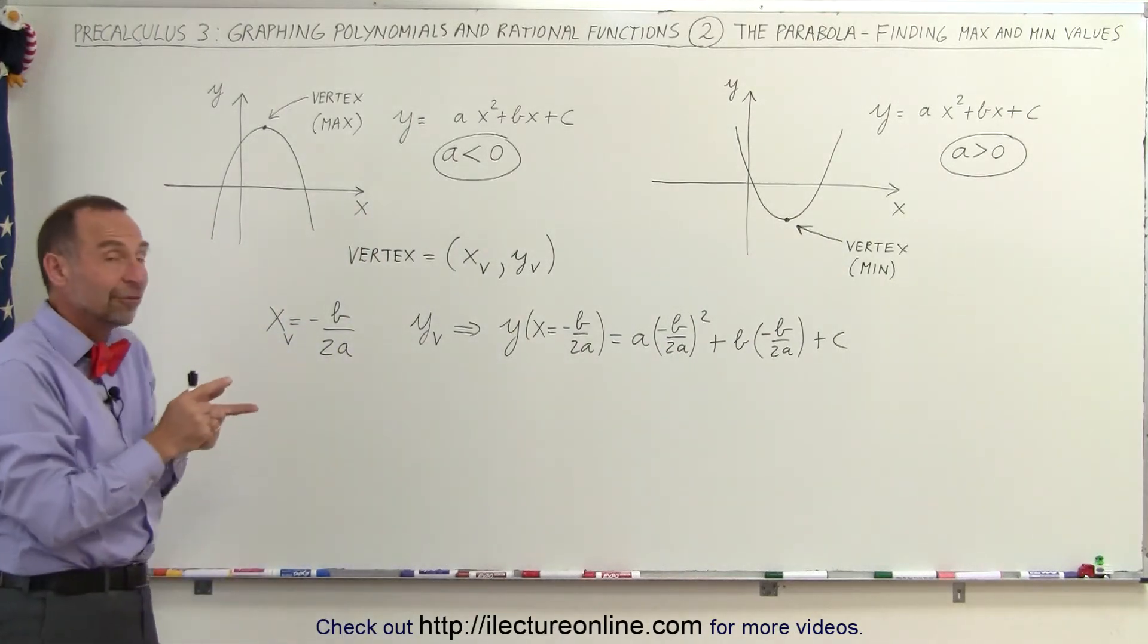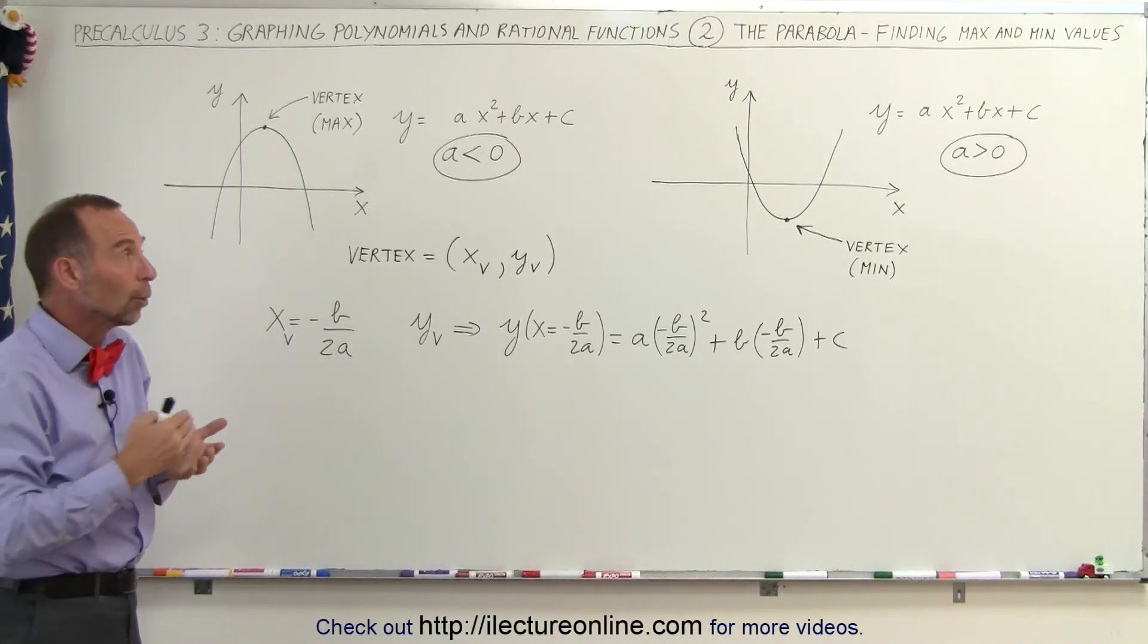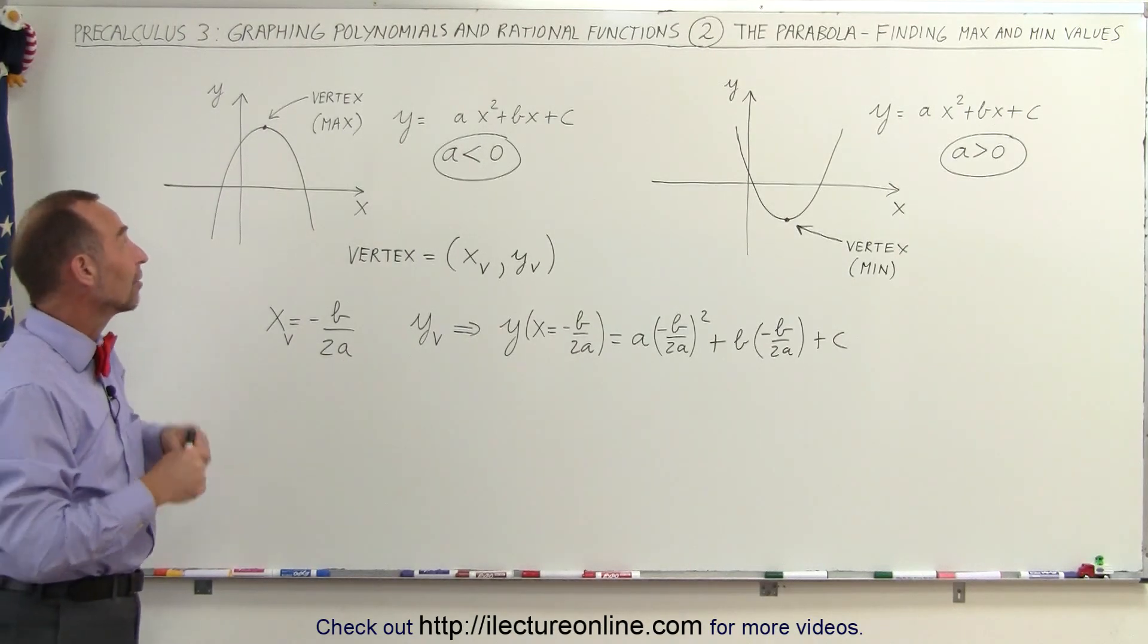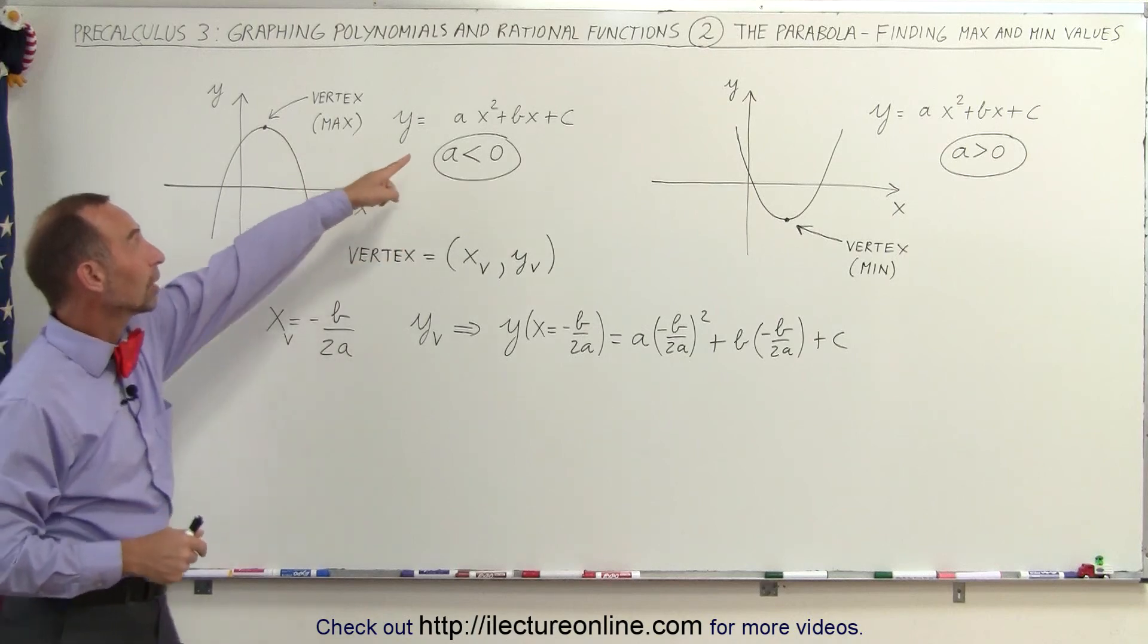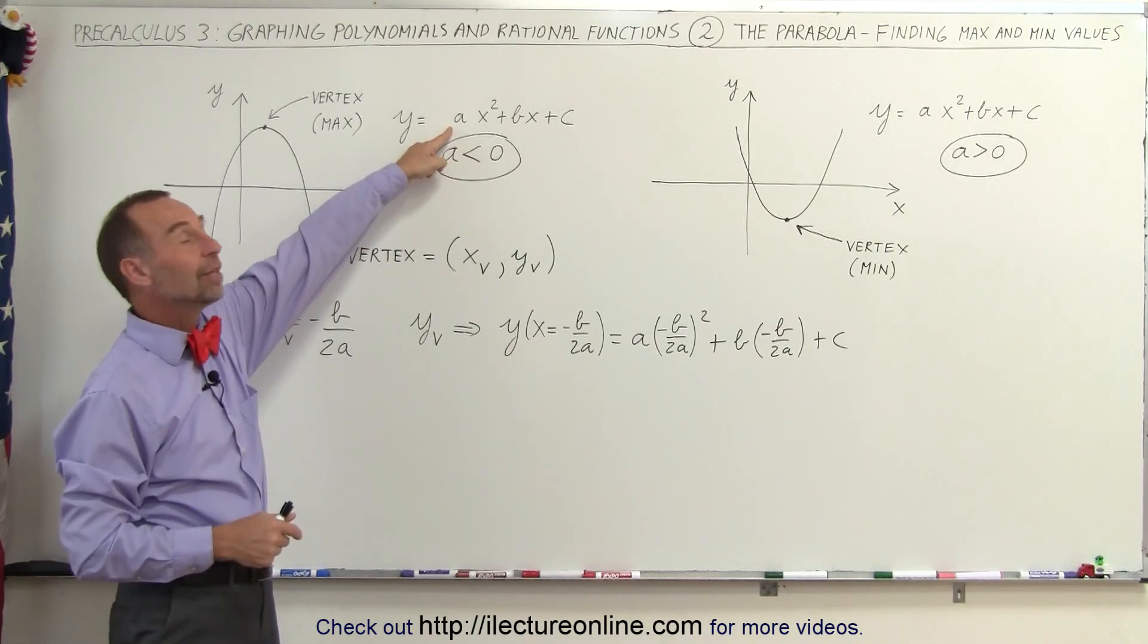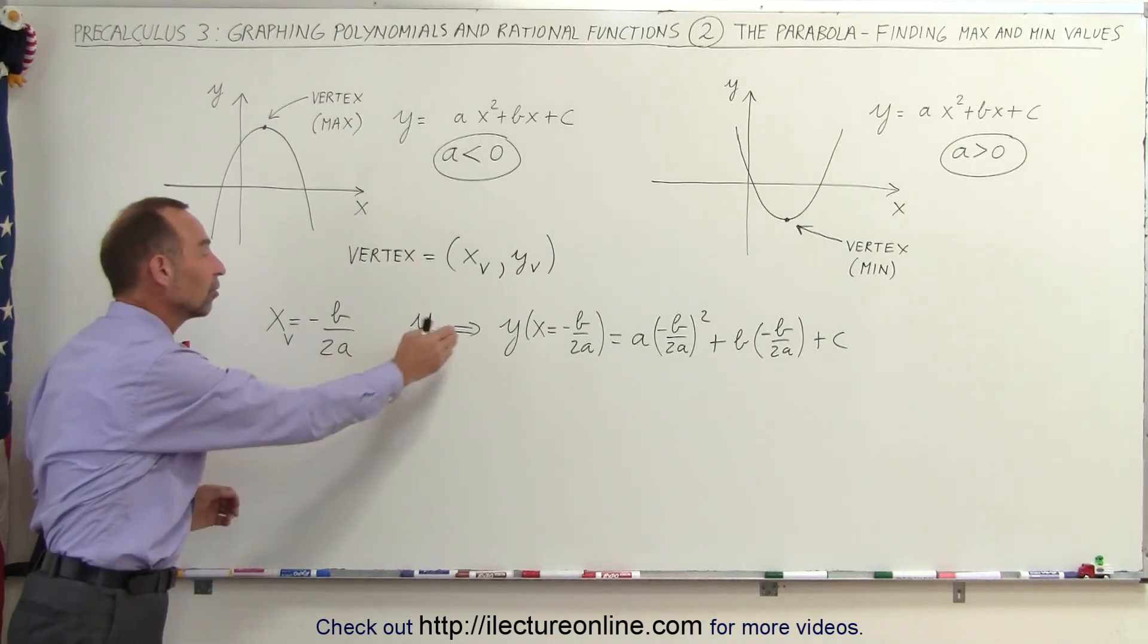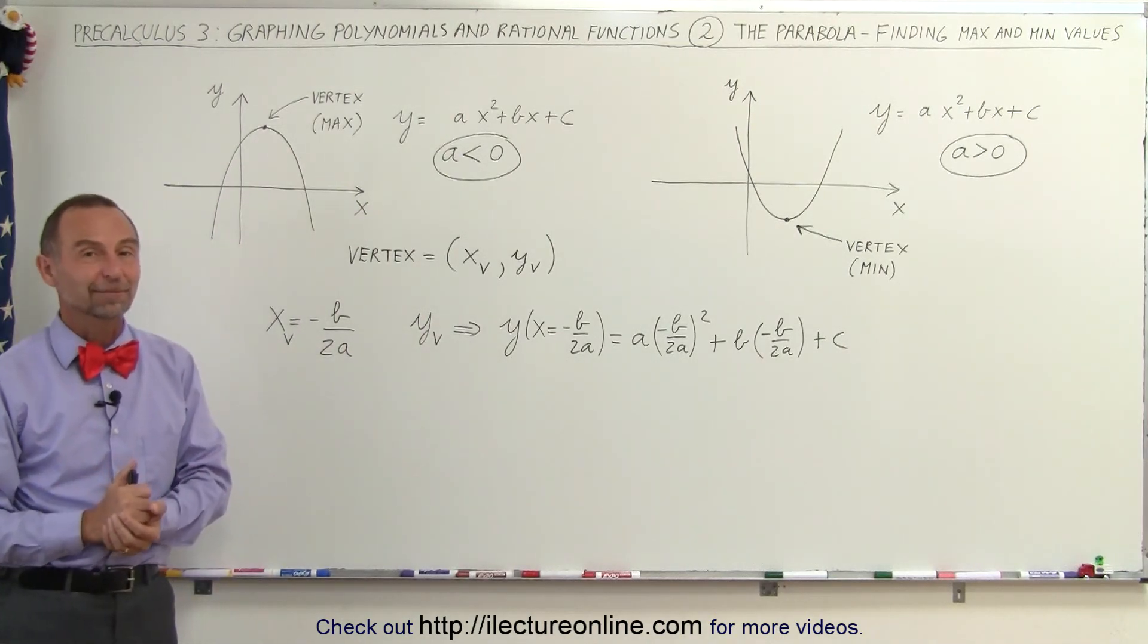So now you know how to find the vertices of a parabola, or in other words they represent either the maximum or minimum value of that function. And we know that it's a maximum value or minimum value by looking at the sign of the coefficient of the first term, and we find the x and y values using this particular technique, and that's how it's done.